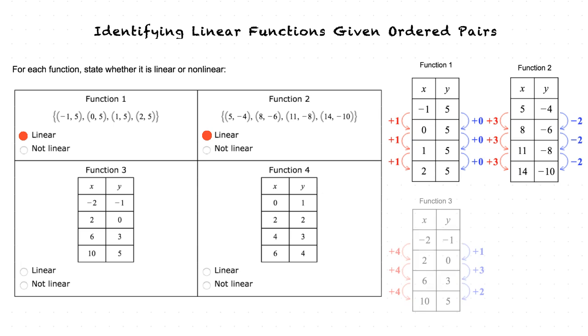For our third function, we can see that the x values have a constant increase by 4. However, the y values are inconsistently increasing by 1, then 3, then 2, making this function not linear.